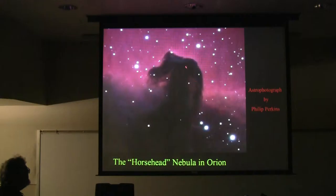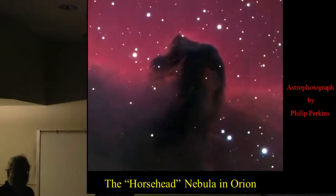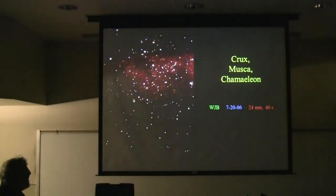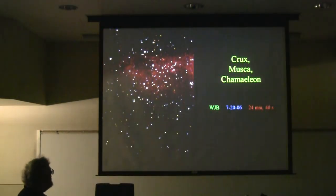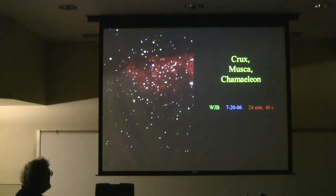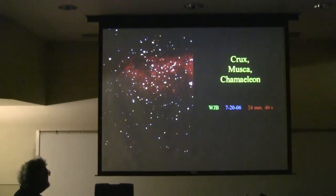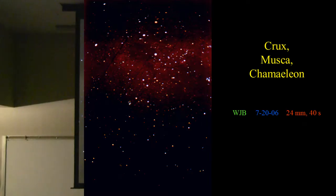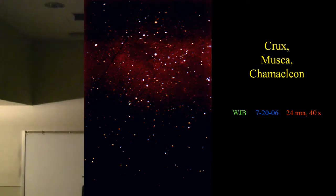Here's the Horsehead Nebula. These used to be thought of as holes in the sky where there wasn't anything, but now we know they're obscuring clouds in the foreground blocking out light from behind. Here's one I took in Australia — here's the Southern Cross, and here's the Coal Sack, the dark area along the Milky Way. It almost looks like a shadow cast on the Milky Way. You can easily see it with the naked eye if you're south of the equator.